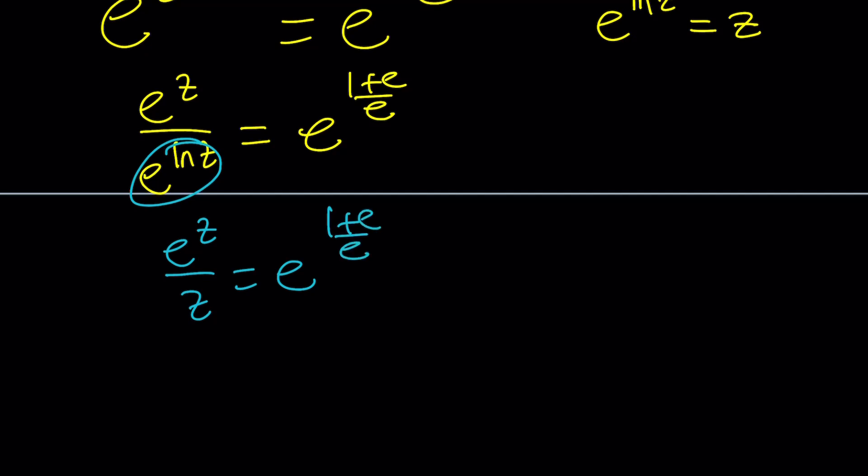Now, I'm getting E to the Z divided by Z equals E to the power 1 plus E over E. Now, if we didn't have the Z at the bottom, then this would be fairly easy to solve. It would be exponential and Z would be 1 plus E over E. But we have a Z at the bottom. That's why it's non-standard.